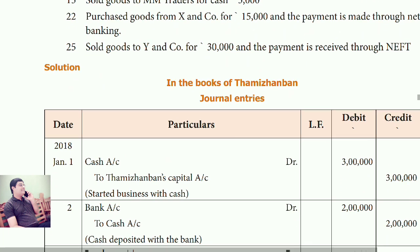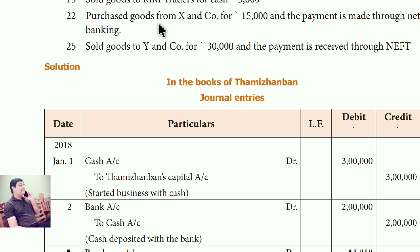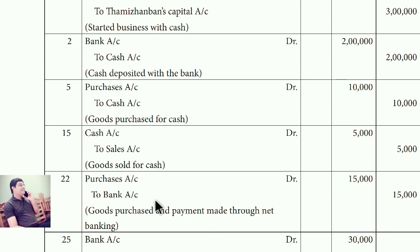Date 22: Purchase goods from Exend Company for Rs.15,000, and the payment is made through net banking. What comes in? Goods. How is the payment made? Through bank, so money goes out from the bank and bank is credited. Entry: Purchase account debit, to bank account.